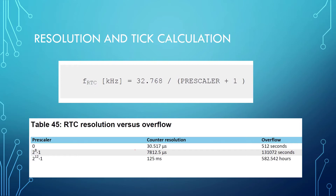It's a 24-bit counter, so we can generate an overflow event up to 512 seconds with no prescaler. If we use prescaler value 2^8 minus 1 (which is 255), we can get up to 131,072 seconds. Using prescaler 4095 (which is 4096 minus 1), we can generate approximately 582 hours before overflow.